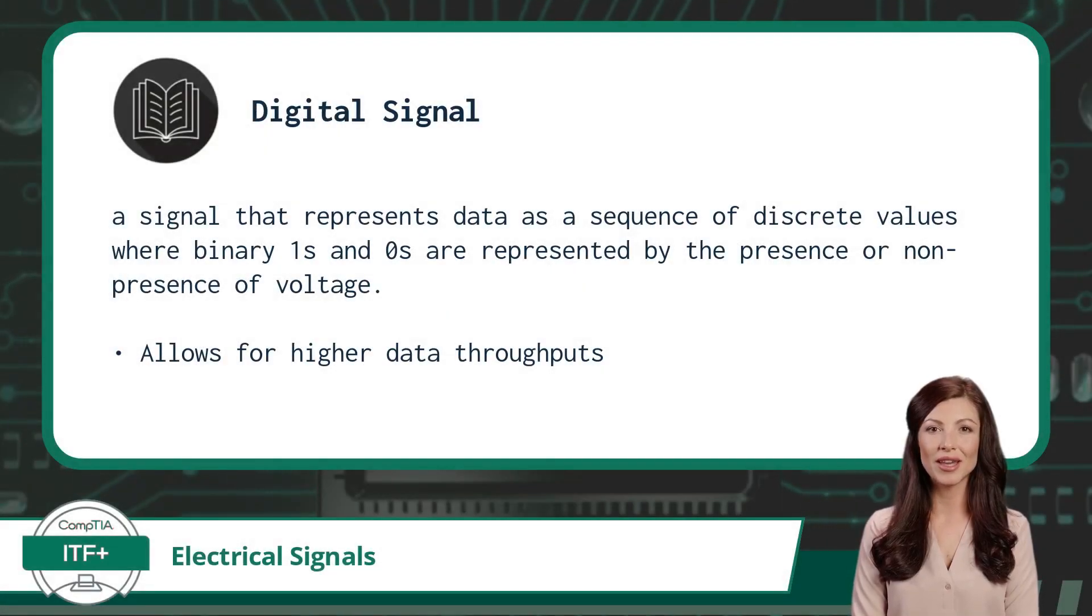Unlike analog signals, a digital signal represents data as a sequence of discrete values where binary ones and zeros are represented by the presence or non-presence of voltage. An upside to digital signals is that they support higher data throughputs. This is probably why digital signals have mostly replaced analog signals in present-day computing.